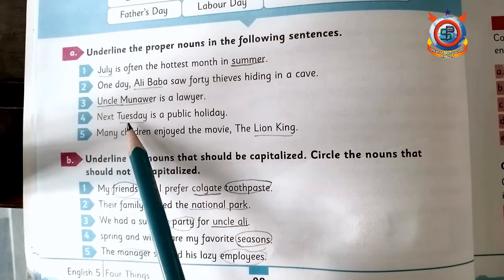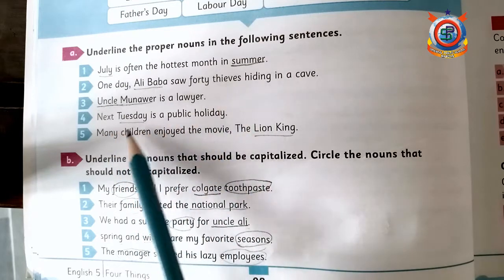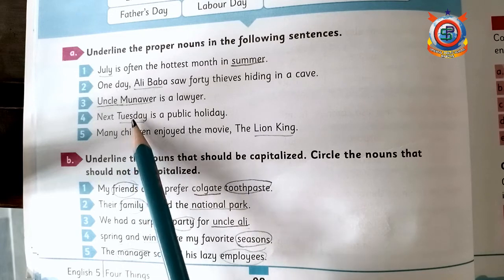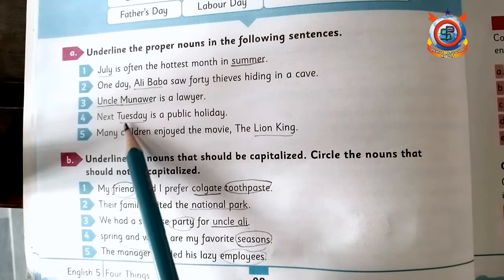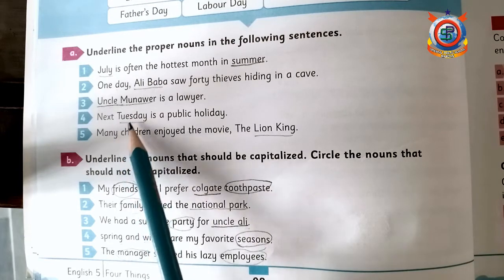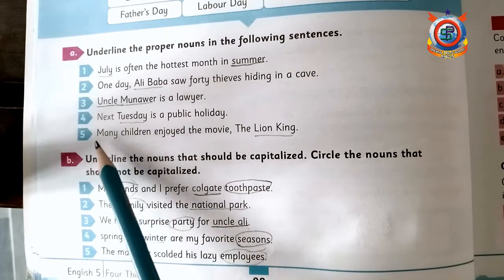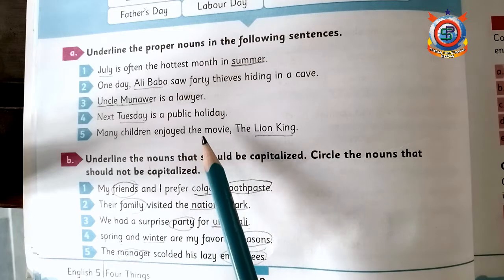Next sentence: 'Tuesday is a public holiday.' Tuesday is a proper noun. I already told you that the days of the week are also proper nouns, so Tuesday is the day of the week — Tuesday is a proper noun. Underline it. Correct.